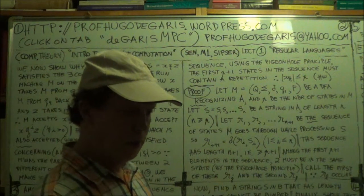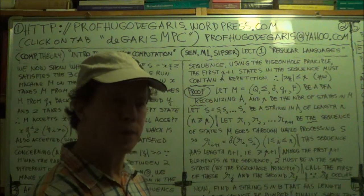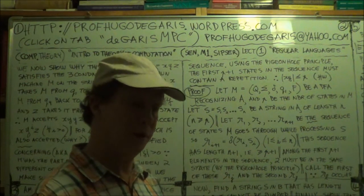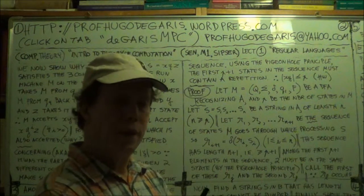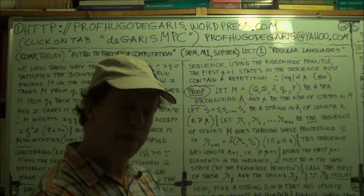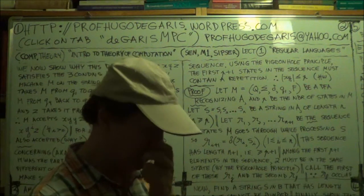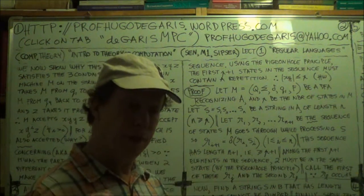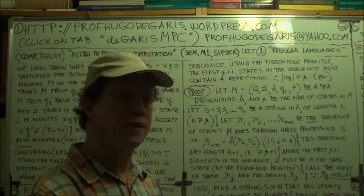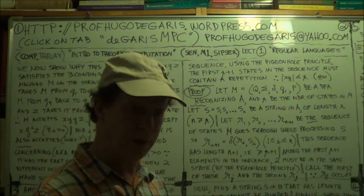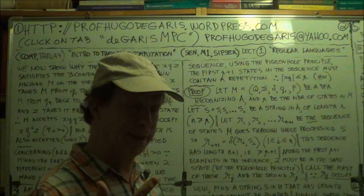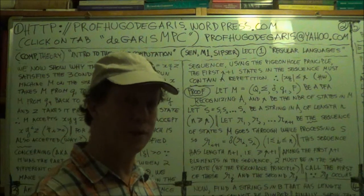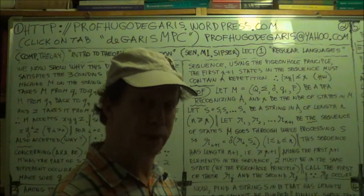We have to show that there is a p — a little p — called the pumping length, such that all strings in the language whose length is greater or equal to p can be pumped. Meaning that after the pumping, the resulting string x, y to the i, z satisfies three conditions: one, that pumped string belongs to the language; two, the size of y is positive; and three, the length of xy is less or equal to the pumping length p.